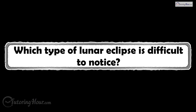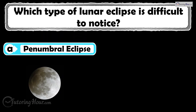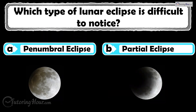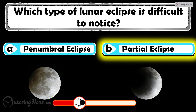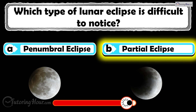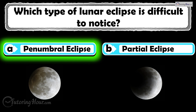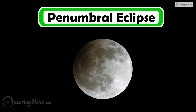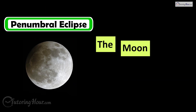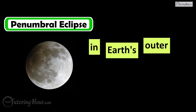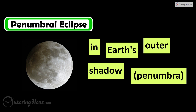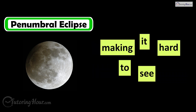Which type of lunar eclipse is difficult to notice? Is it A, penumbral eclipse, or B, partial eclipse? The correct answer is the penumbral eclipse. The moon dims only slightly in Earth's outer shadow, penumbra, making it hard to see.